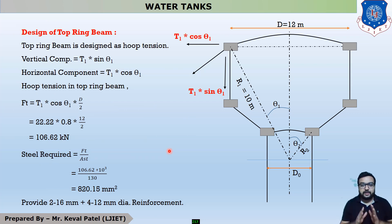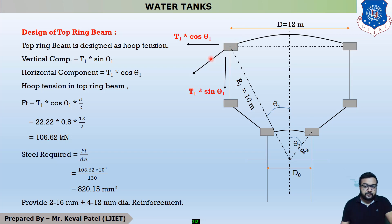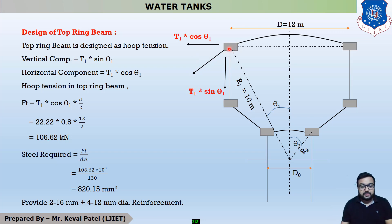There are two types of forces acting on the Intze type water tank. The first force is the meridional force, which is maximum at the support. The second is the hoop force, also called the circumferential force, which is maximum at the crown. When designing the circular top ring beam, there are two components of hoop tension.